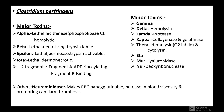Clostridium perfringens produces two kinds of toxins: major toxins and minor toxins. Major toxins include Alpha toxin (lethal, lecithinase/phospholipase C activity, hemolytic), Beta toxin (lethal, necrotizing, trypsin-labile), Epsilon toxin (lethal, permease, trypsin-activatable), and Iota toxin (lethal, dermonecrotic — with Fragment A as the ADP-ribosylating fragment and Fragment B as the binding fragment). Minor toxins include Gamma, Delta (hemolysin), Lambda (protease), Kappa (collagenase/gelatinase), Theta (hemolysin, oxygen-labile cytolysin), Eta, and Mu toxin (hyaluronidase and DNase activity).